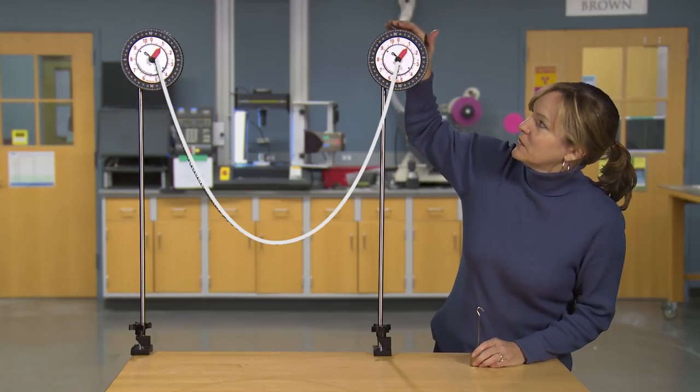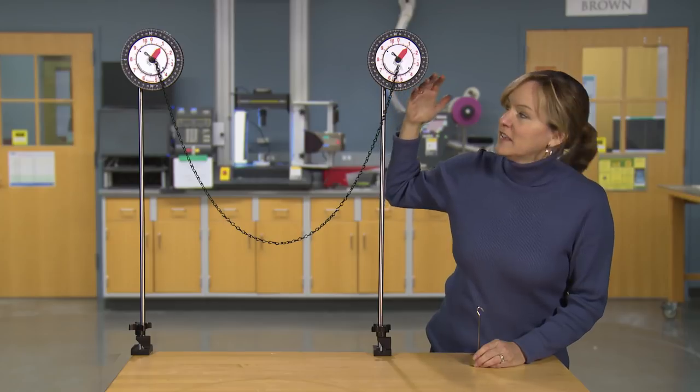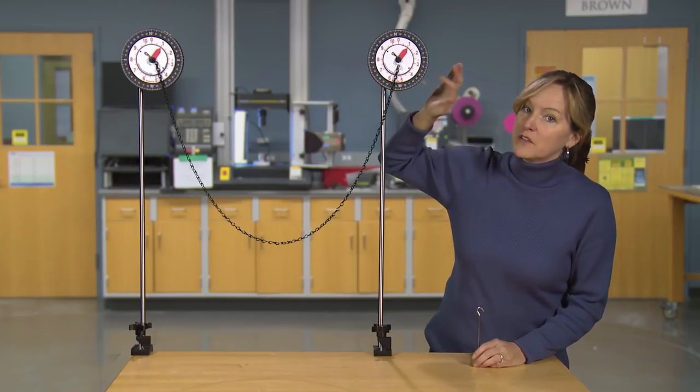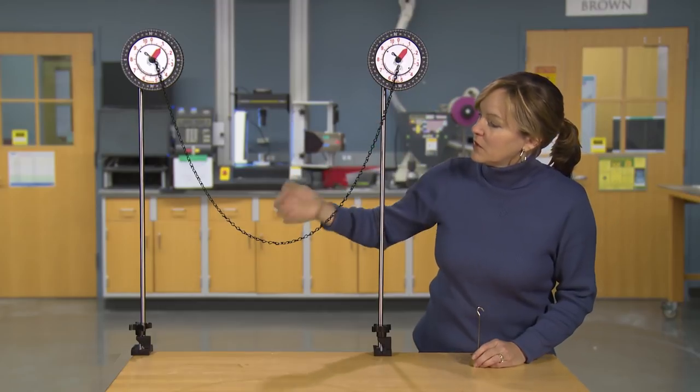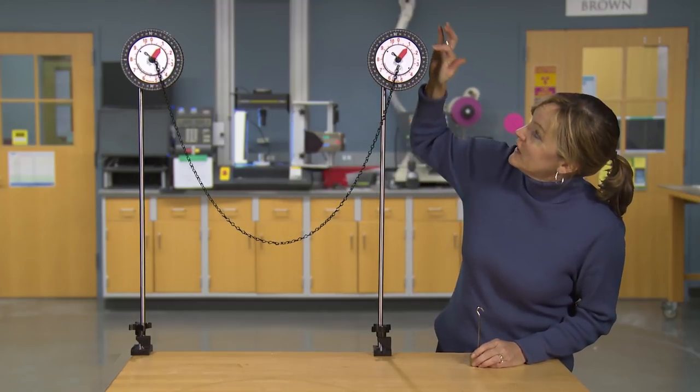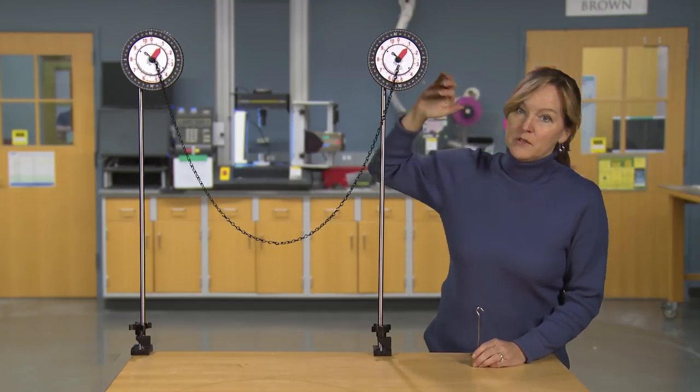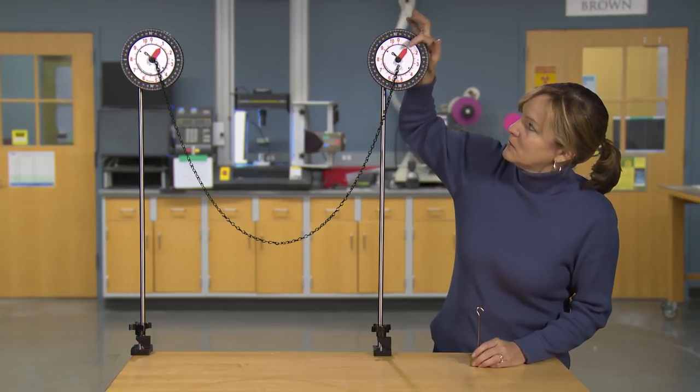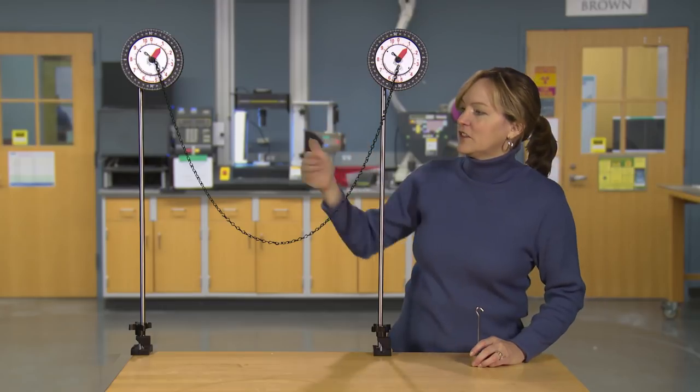It's going to allow me to measure the angle of the chain and also the force in the chain. So right now, with no load, just the weight of the chain, we're reading one newton on the tension protractor. So the chain itself produces a force in the chain of one newton.